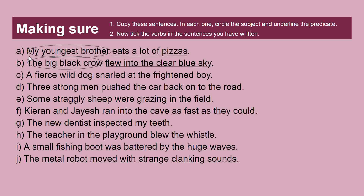In general in sentences, the subject comes first and the predicate follows. Sentence C: 'A fierce wild dog snarled at the frightened boy.' Sentence D: 'Three strong men pushed the car back onto the road.' The subject is 'three strong men' and the predicate is 'pushed the car back onto the road.'